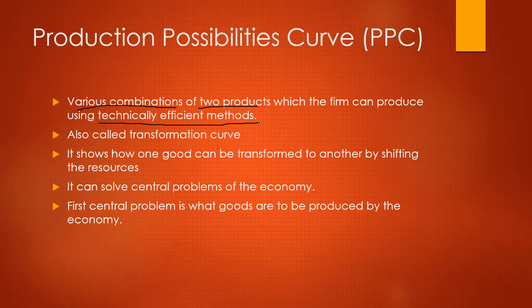We plot two products on the x and y axes, which is why it is also called a transformation curve. The production possibility curve shows how one good can be transformed into another — not physically, but by shifting resources such as labor hours and raw materials to produce them. That is why it is called a transformation curve. It can also solve the central problems of the economy.